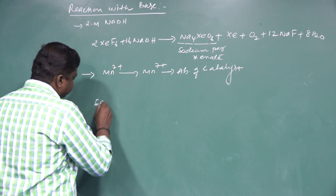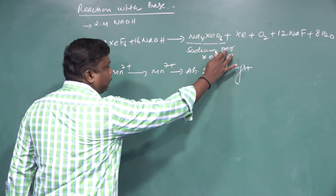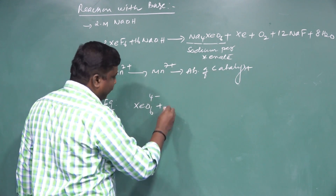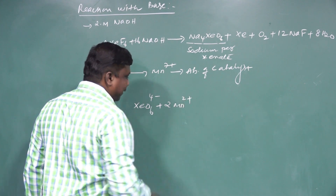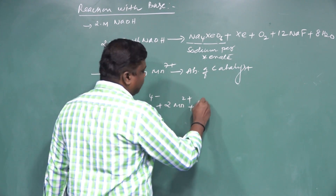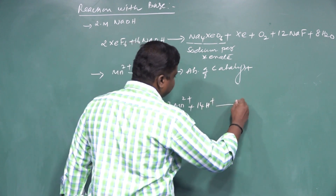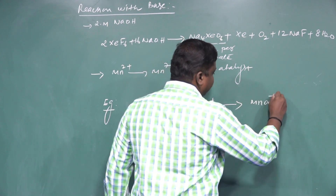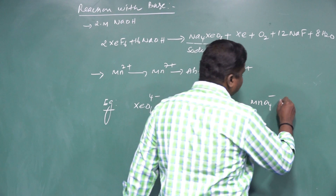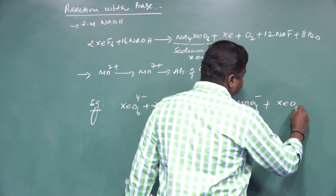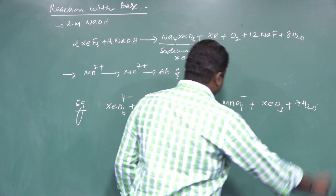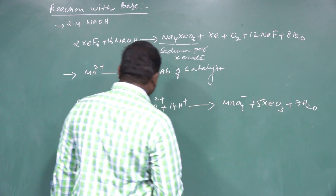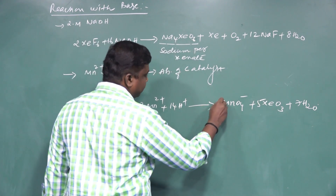Example: the perxenate ion, in the presence of Mn2+ and H+, gives permanganate ion. The balanced equation involves 5 perxenate ions and 2 Mn2+ ions, with 14 hydrogen ions.